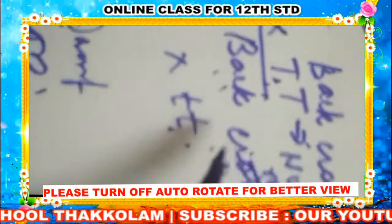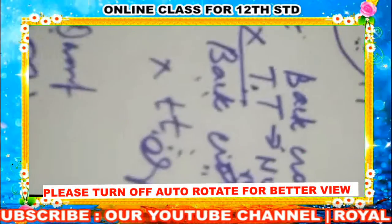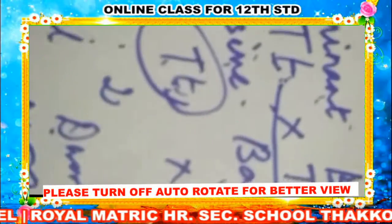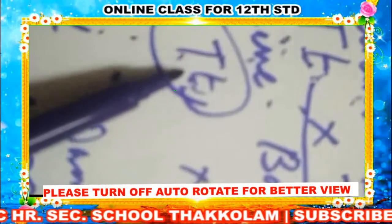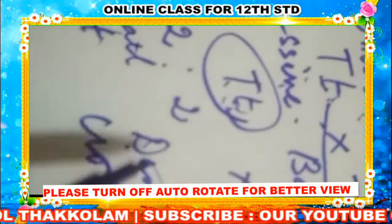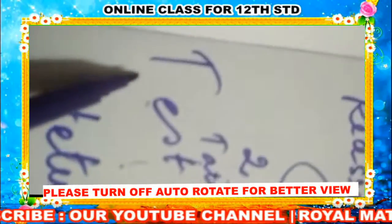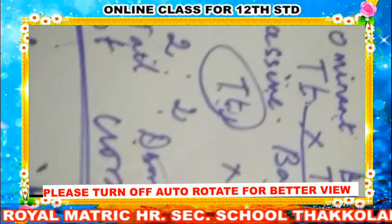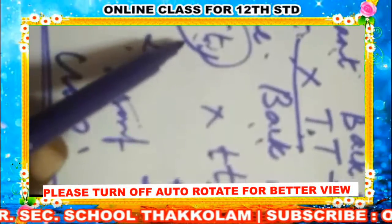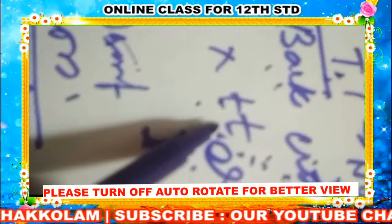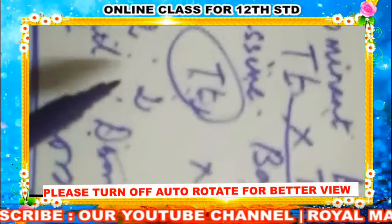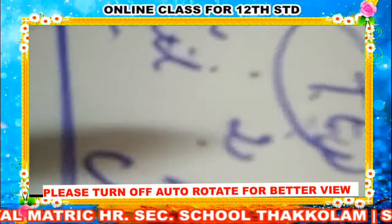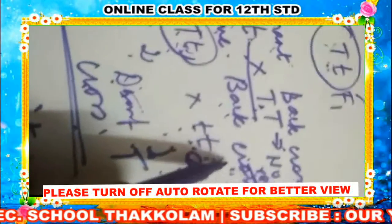When crossing the F1 generation with the recessive parent, the answer we are getting is all are in equal phenotype ratio — two are dwarf and two are tall. So when the F1 generation is crossed with the recessive parent, you get tall and dwarf in the ratio 2:2. This is called as test cross — the recessive back cross is specified as test cross.